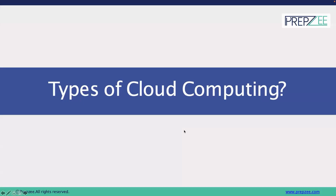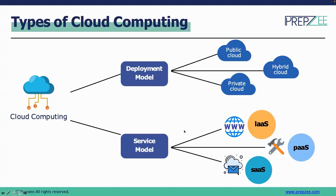Moving on to the types of cloud computing, there are two different models we can work with. First, we have the deployment model, and then we have the service models. Under deployment models, we have public cloud, private cloud, and a mixture of both — hybrid cloud. Under service models, we have Infrastructure as a Service, Platform as a Service, and Software as a Service. We will be going through these different models one by one so that you can have complete clarity on each of them.